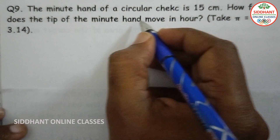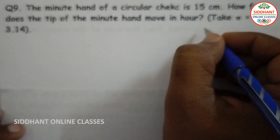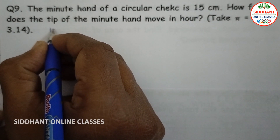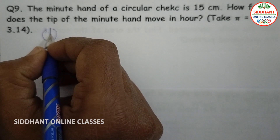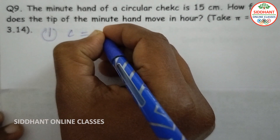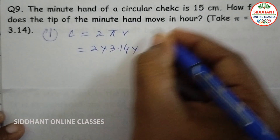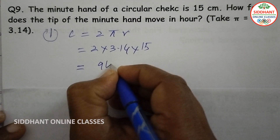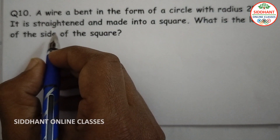Question number nine: the minute hand of a circular clock is 15 centimeters. How far does the tip of the minute hand move in one hour, taking pi as 3.14? For one hour the minute hand completes one full rotation, so we find the circumference: 2 into 3.14 into 15 equals 30 into 3.14, which gives 94.2 centimeters.